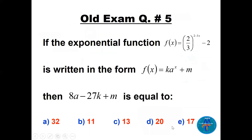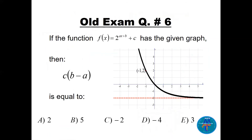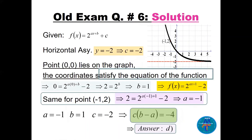Question six: given the graph of f(x) = 2^(ax+b) + c, find c·b - a. Start with the horizontal asymptote: c = -2. Using the point (0, 0): substituting gives b = 1, so the function becomes 2^(ax+1) - 2. Using another point (-1, 2): substituting gives a = -1. So a = -1, b = 1, c = -2, and the answer is D.